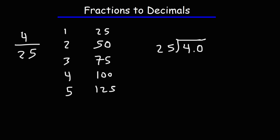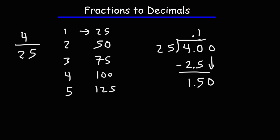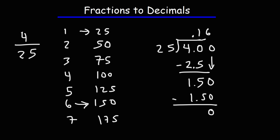The highest multiple of 25 under 40 is just 25, so it goes into it one time. 25 times 1 is 25. Let's not forget the decimal. Now 40 minus 25, that's going to be 15. Now 25 doesn't go into 15, so we need to bring down a 0. We're going to treat 1.50 as if it's 150. 25 goes into 150 exactly 6 times, giving us a remainder of 0. So our answer is 0.16 — 4 over 25 is equivalent to 0.16 as a decimal.